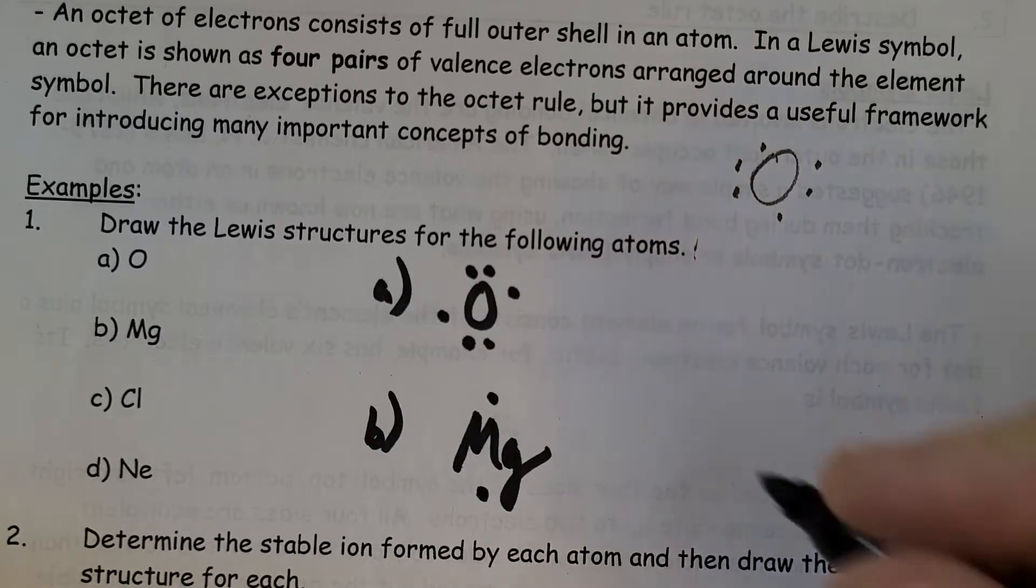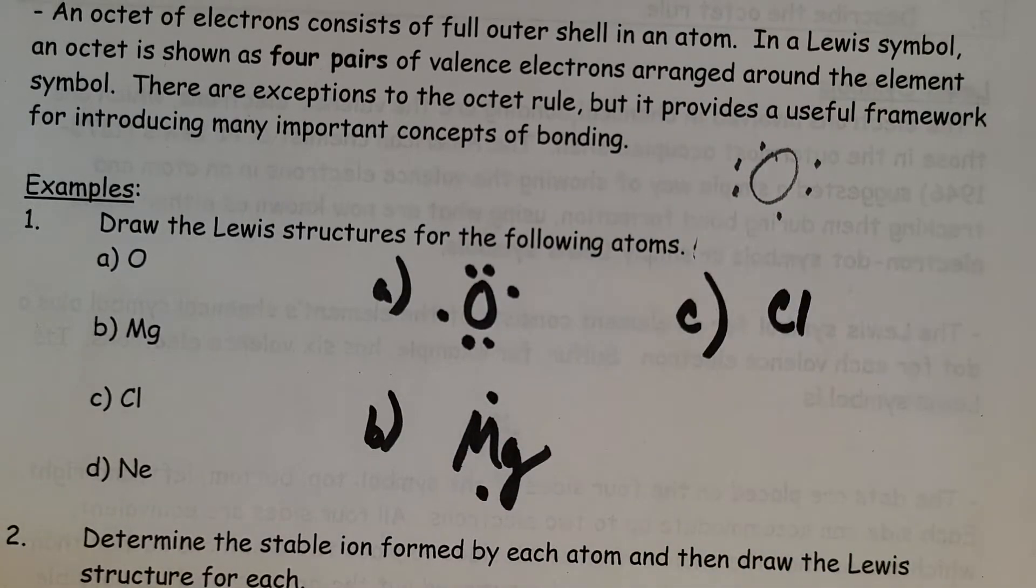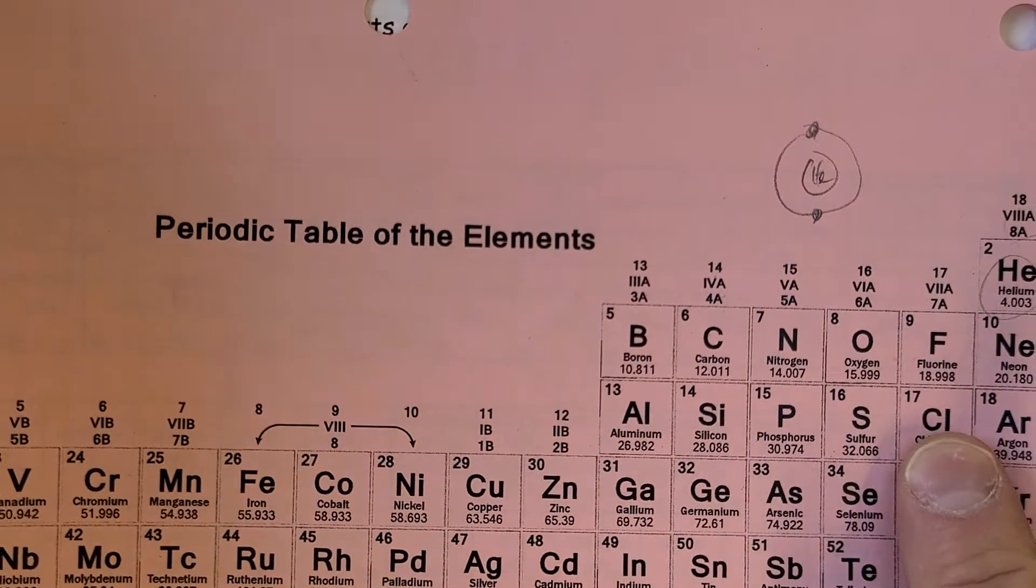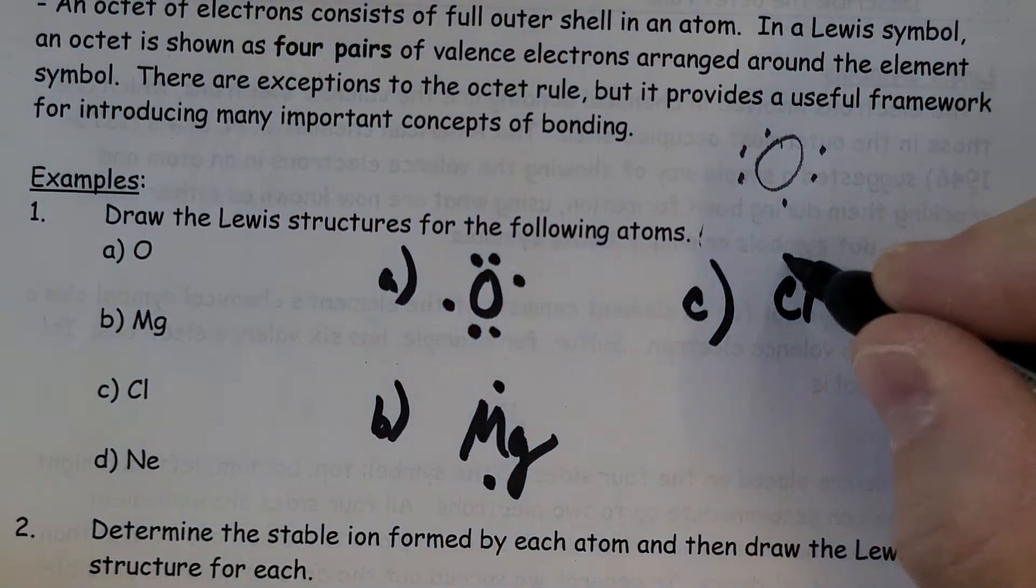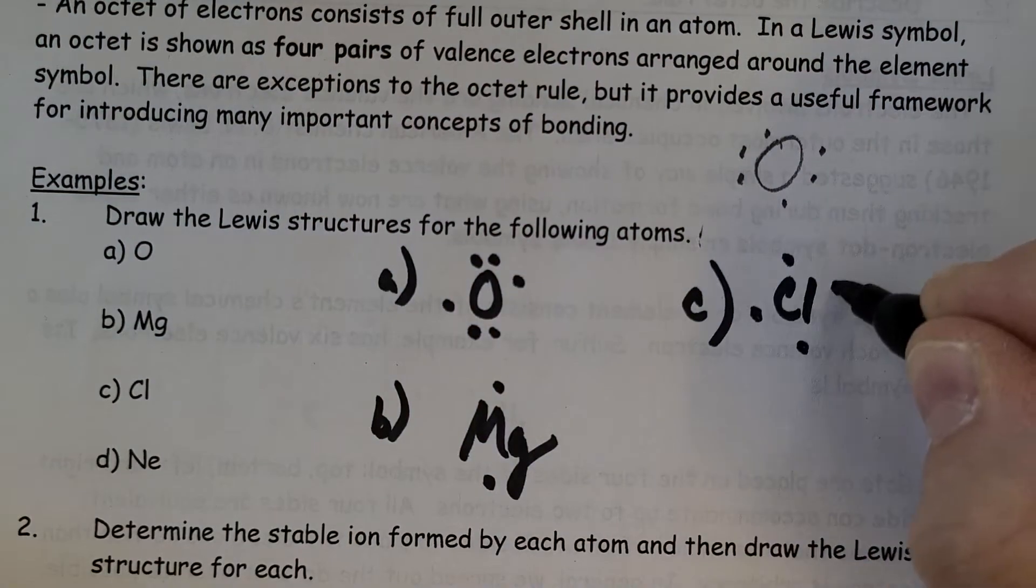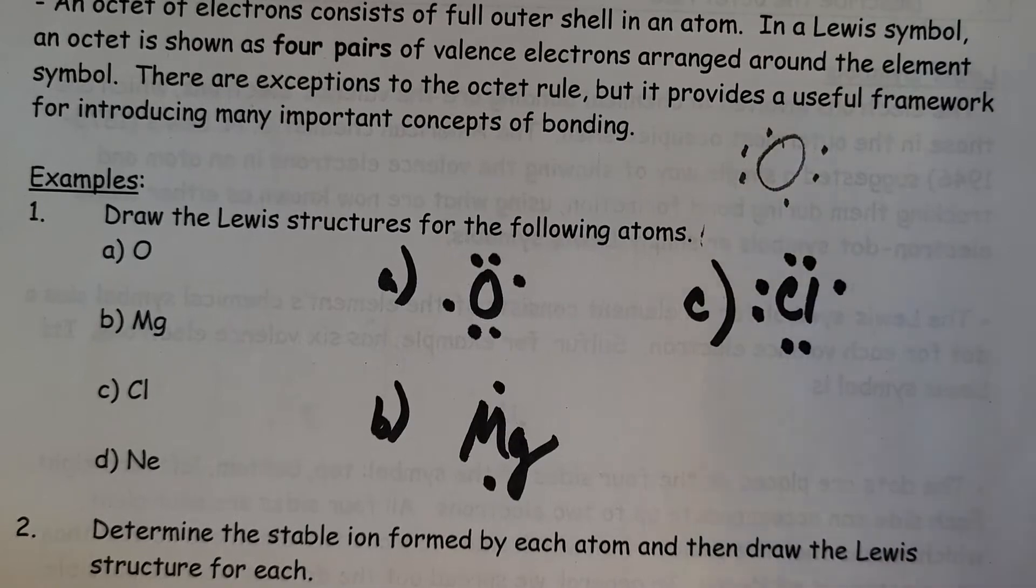Chlorine, so chlorine over here, Group 7A, so it has seven valence electrons: one, two, three, four, five, six, seven. So we have an empty space right there.